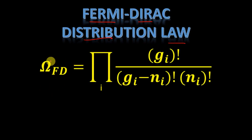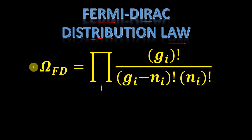Hello geniuses. In this video we will derive the Fermi-Dirac distribution law. In the previous video we derived the thermodynamic probability for Fermi-Dirac statistics. Now as we did in the Bose-Einstein and Maxwell-Boltzmann statistics, using this we will derive the distribution law.